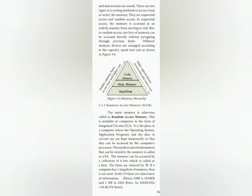RAM — random access memory. The main memory is otherwise called as the random access memory. This is available in computers in the form of integrated circuits, that is ICs. It is the place in a computer where the operating system, application programs and the data currently used are kept temporarily so that they can be accessed by the computer processor.